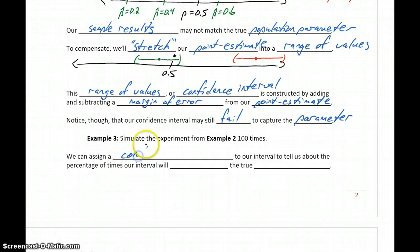So we can assign that confidence level, and that confidence level is going to tell us about the percentage of times our interval will capture the true parameter whenever that experiment is repeated over and over and over and over again.